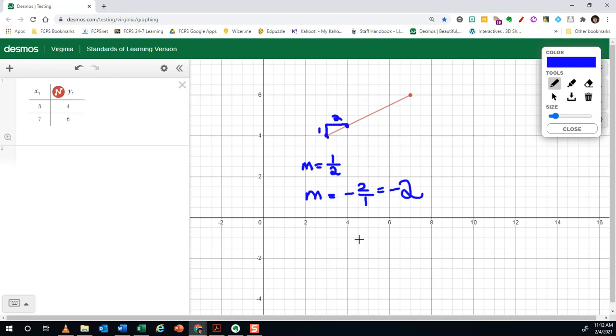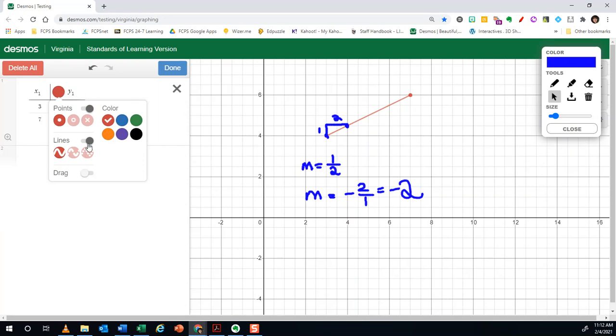So the slope for that problem is negative two. I was able to solve that by inputting my points into a table by doing plus table and including my X and Y's, and by going to edit list and changing my preferences by clicking on the dot, turning on the line. Hope this helps you.